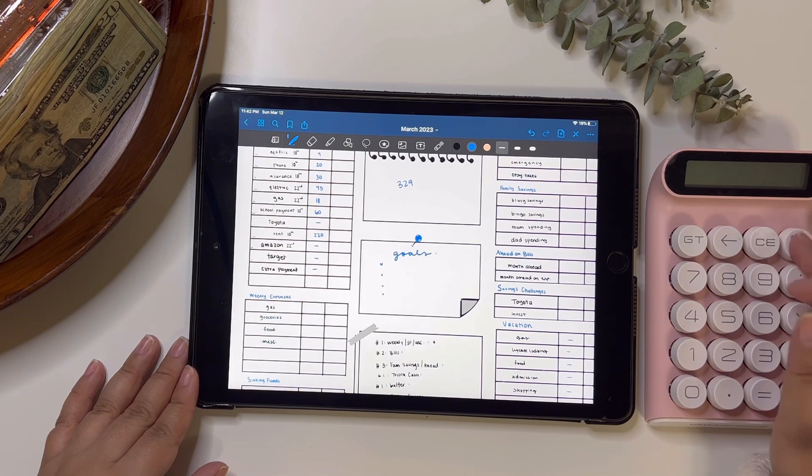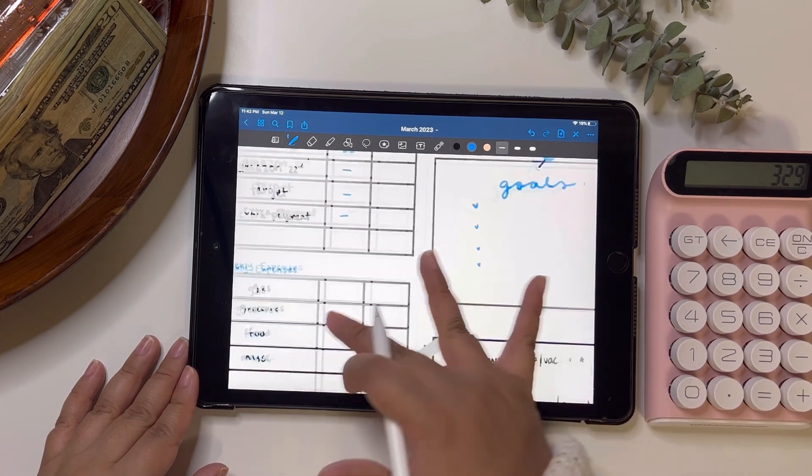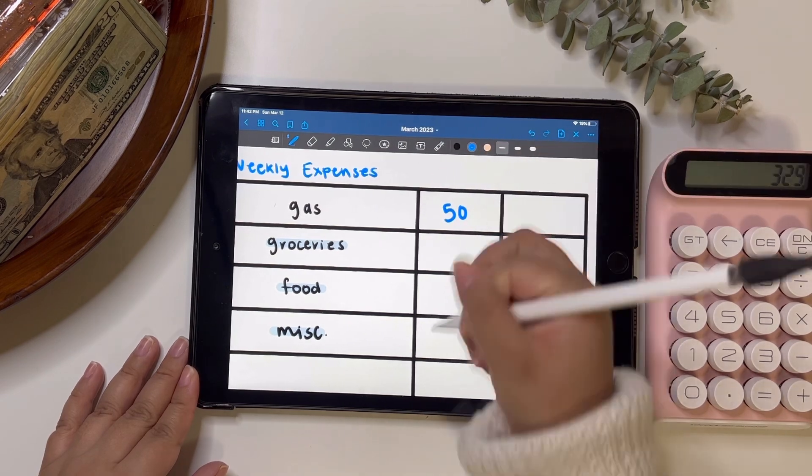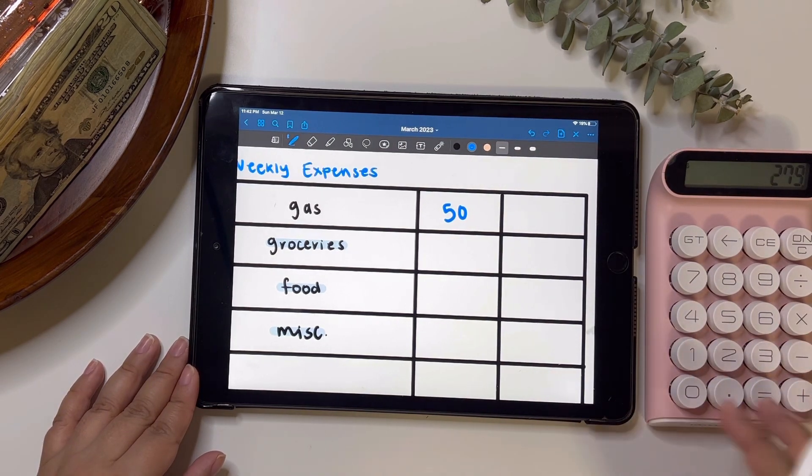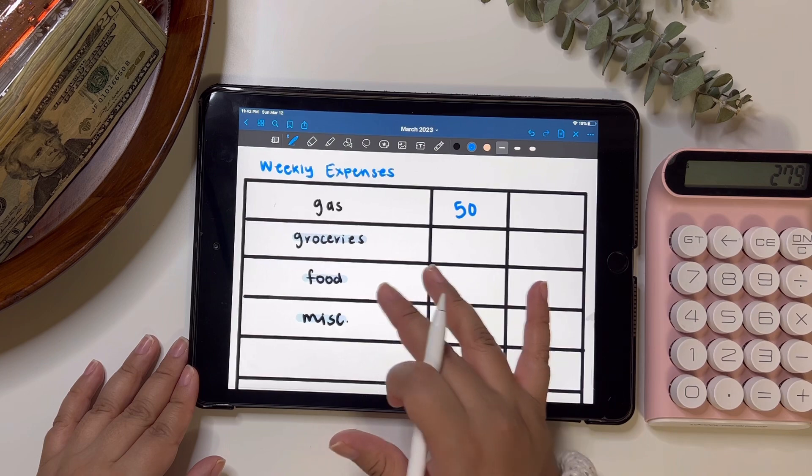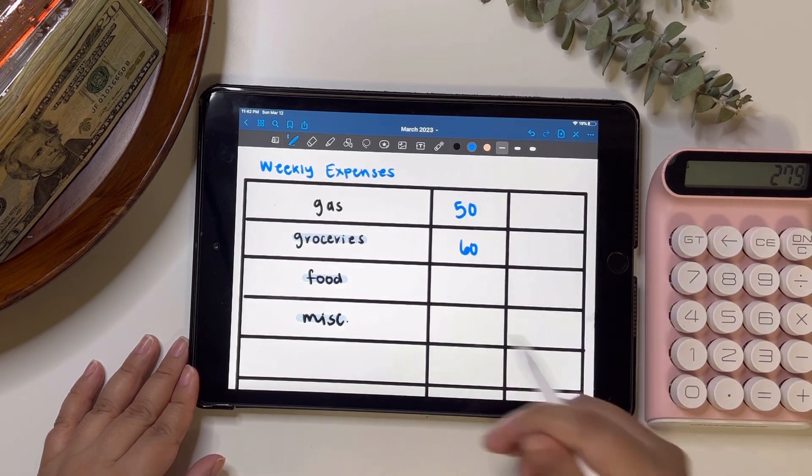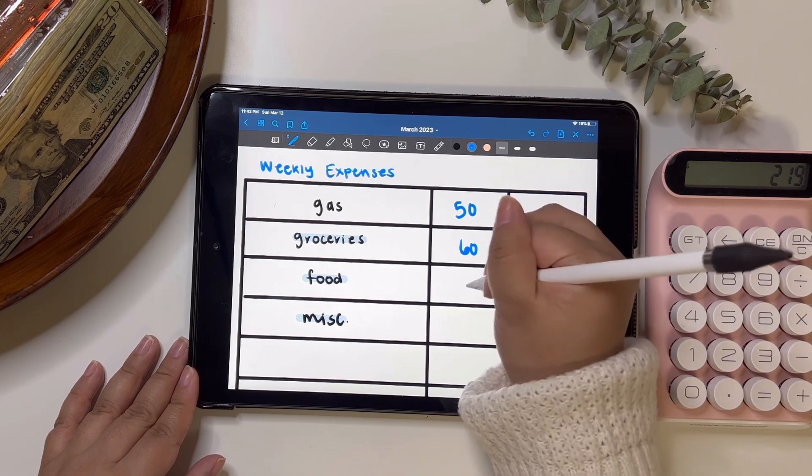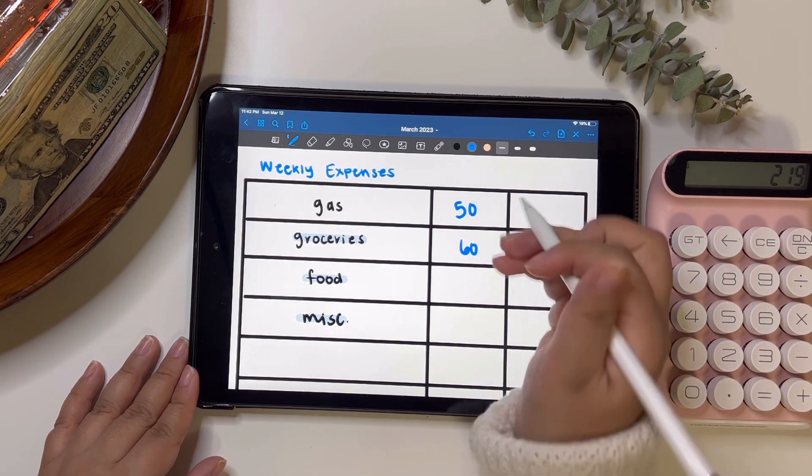Gas, as always, it's just going to get $50. That usually lasts us the whole week. And then groceries, I like to do $60. Surprisingly, $60 I've been making it work. So yeah, I'm going to stick with the $60.